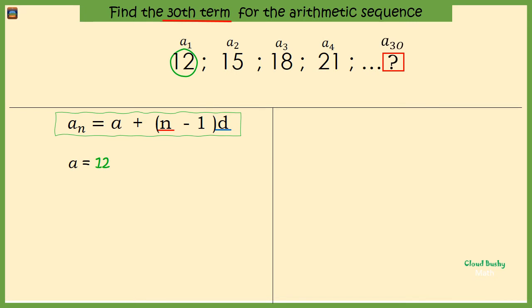And the common difference d is 15 minus 12, that is 3. The common difference is the difference between two consecutive terms. We could use any two terms to find the common difference.